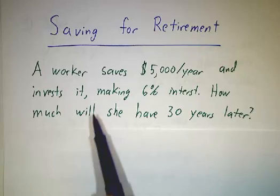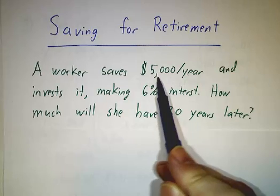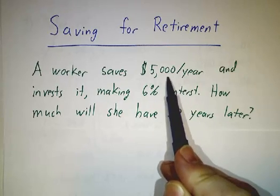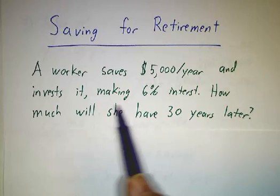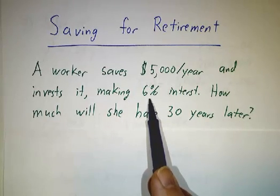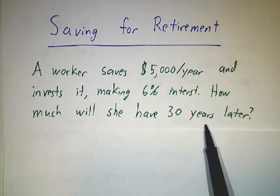We have a worker that socks away $5,000 a year. So every month, $5,000 divided by 12 of her salary gets put into the savings plan and the savings plan is earning 6% interest. How much can she expect to have when she retires 30 years later?